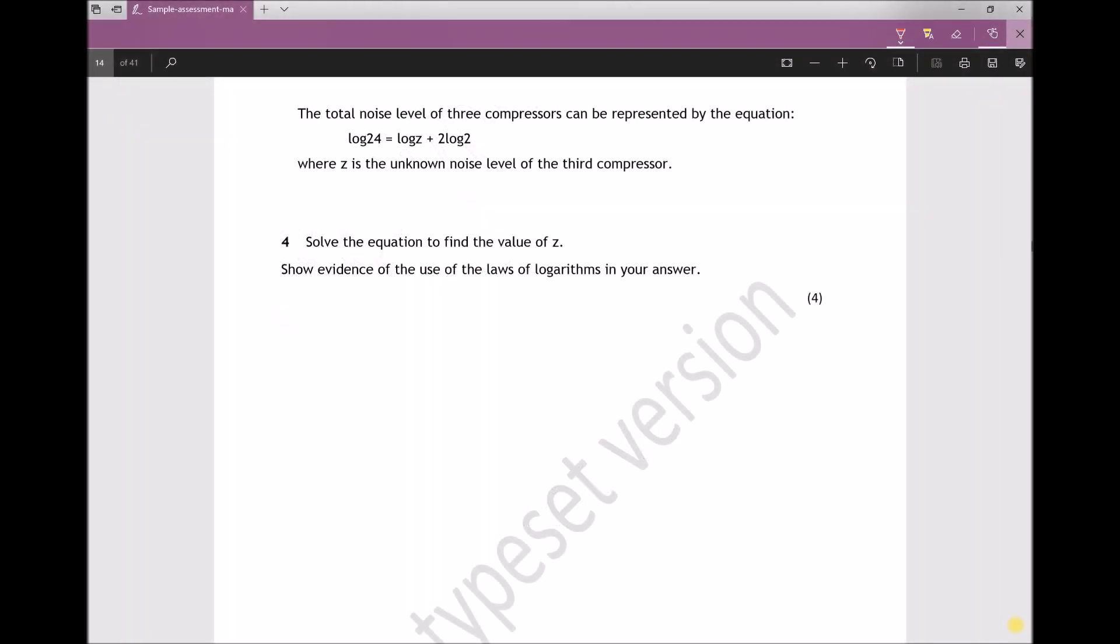Question 4 states: the total noise level of three compressors can be represented by the equation log24 = logZ + 2log2, where Z is the unknown noise level of the third compressor. The question asks us to solve the equation to find the value of Z and show evidence of using the laws of logarithms in your answer.